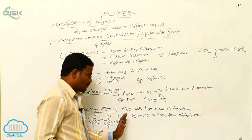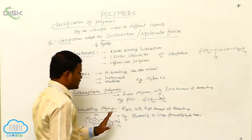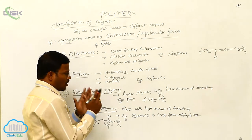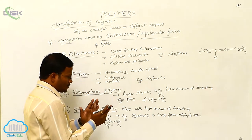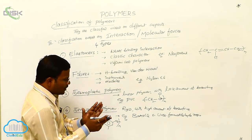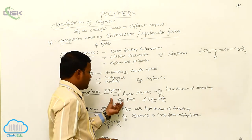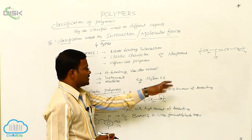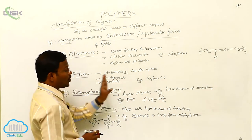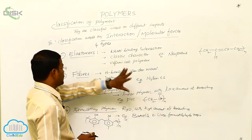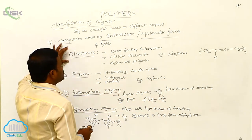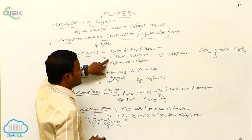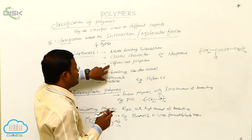Bakelite and urea formaldehyde resins are thermosetting polymers. Thermoplastic polymers soften upon heating and harden upon cooling — an example is PVC. Fibers such as nylon 6-6 and polyesters also stand as examples of fiber polymers.